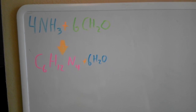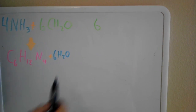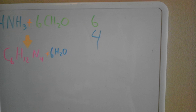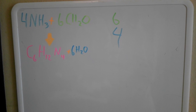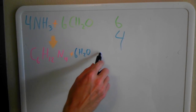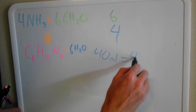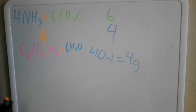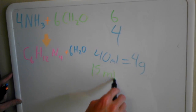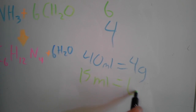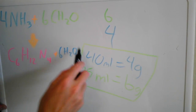That means what you're looking for is a 6 to 4 ratio between the two. Since we know that there's 10% available ammonia, 40 milliliters of ammonia equals 4 grams. And 15 milliliters of the 40% solution of formaldehyde will give you 6 grams. So that is the ratio we are looking for in this reaction.